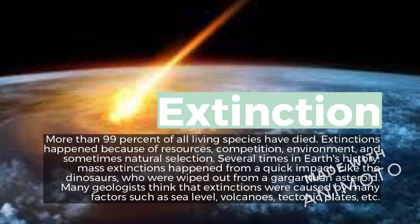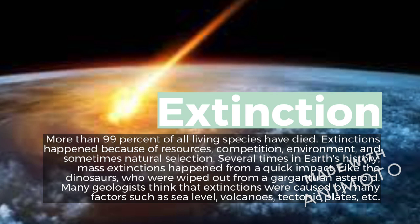Extinction: more than 99% of all species have died. Extinction happened because of resources, competition, environment, and sometimes natural selection. Several times in Earth's history, mass extinctions happened from a quick impact — like the dinosaurs who were wiped out by a gargantuan asteroid. Many geologists think that extinctions were caused by many factors such as sea level changes, volcanoes, tectonic plates, and more.